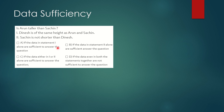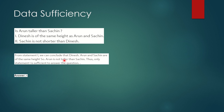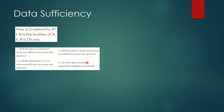Since data in Statement 1 alone is sufficient, we check whether Statement 2 — 'Sachin is not shorter than Dinesh' — might also independently work. From Statement 1 we already concluded Arun and Sachin have the same height, so Arun is not taller than Sachin. Statement 2 is not needed. The answer is that Statement 1 alone is sufficient.